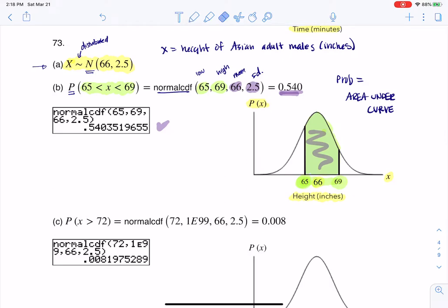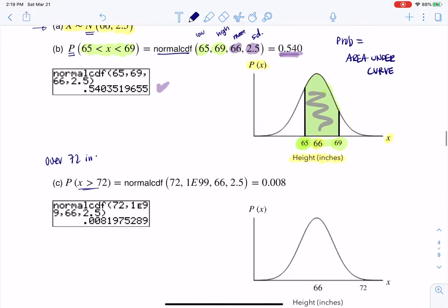Let's figure out what C is asking. So C is saying, would you expect to meet many Asian males over 72 inches tall? Well, let's go figure that out. So if I want to meet, or if I want to talk about the probability of meeting an Asian male over 72 inches tall, that implies x has to be greater than 72.